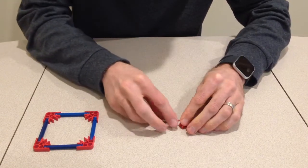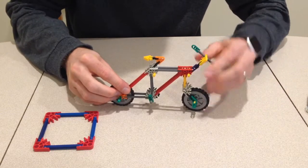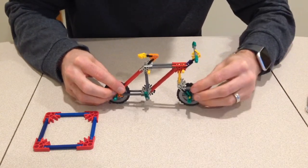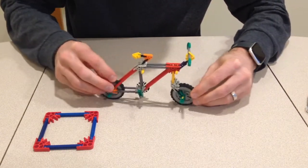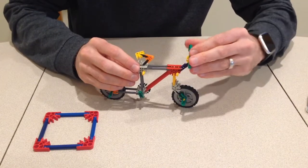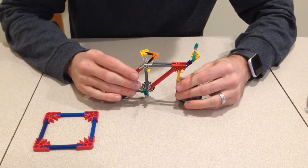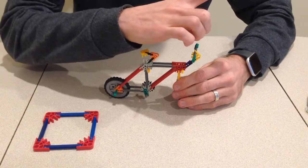Today I'm going to show you how to use Micro K'nex to build this bicycle. The bike has two rolling wheels, a seat, and handlebars. If you want to use regular pieces to build a bike, click on the link right here.